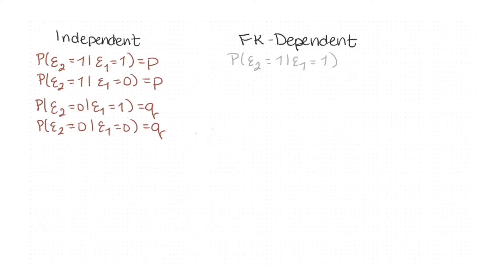Under first-kind dependence, the outcome of the first Bernoulli random variable changes the probability of success or failure for all subsequent random variables. We use the dependency coefficient delta to weight those probabilities. The probability that the second variable is a 1, given the first is a 1, is now P+. The probability that the second comes out a 1, given the first came out 0, is P- — we weight it less.